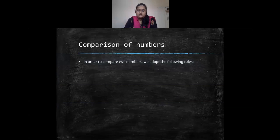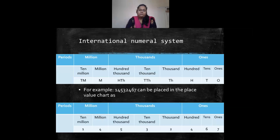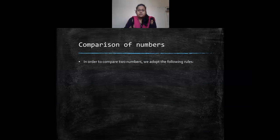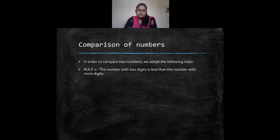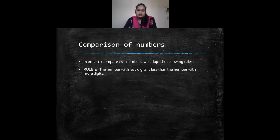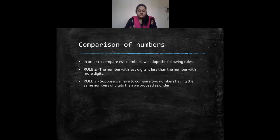Now for comparing numbers — today's topic — the first rule is: a number with fewer digits is less than a number with more digits. When two numbers are given, the one with fewer digits is the smaller number and the one with more digits is the greater number.